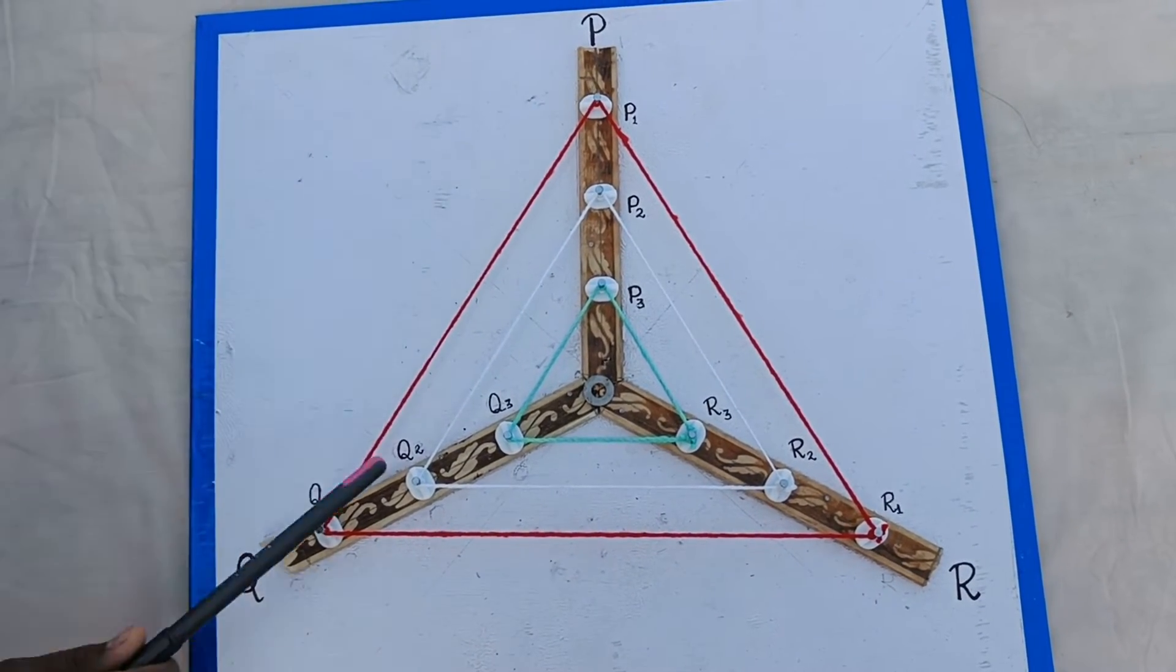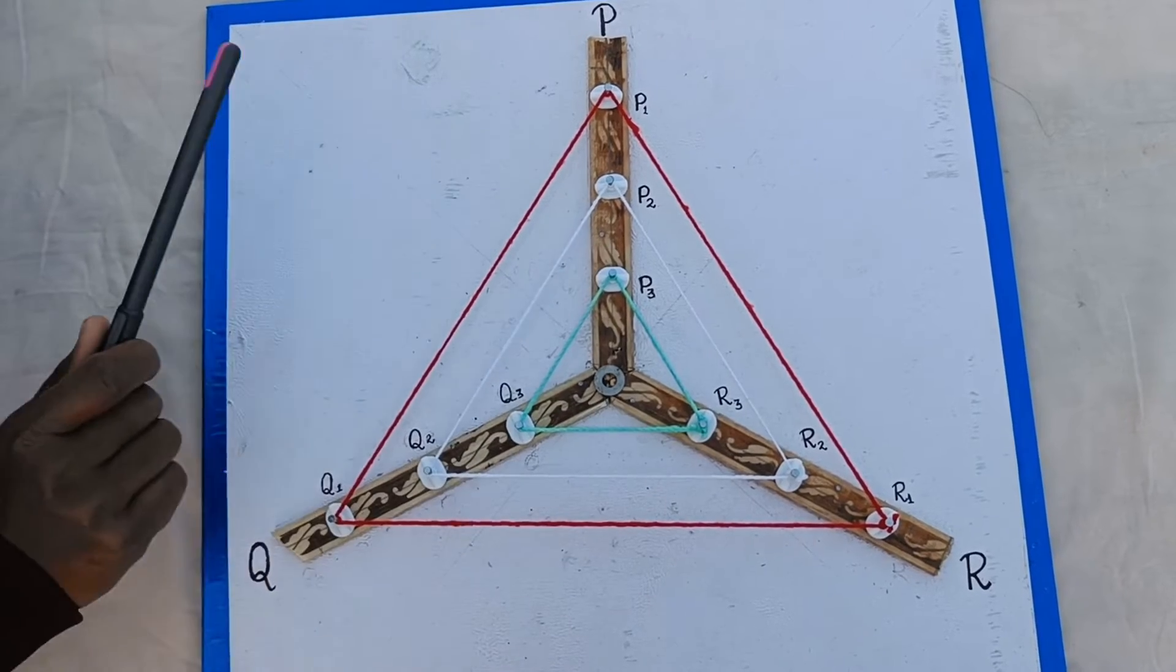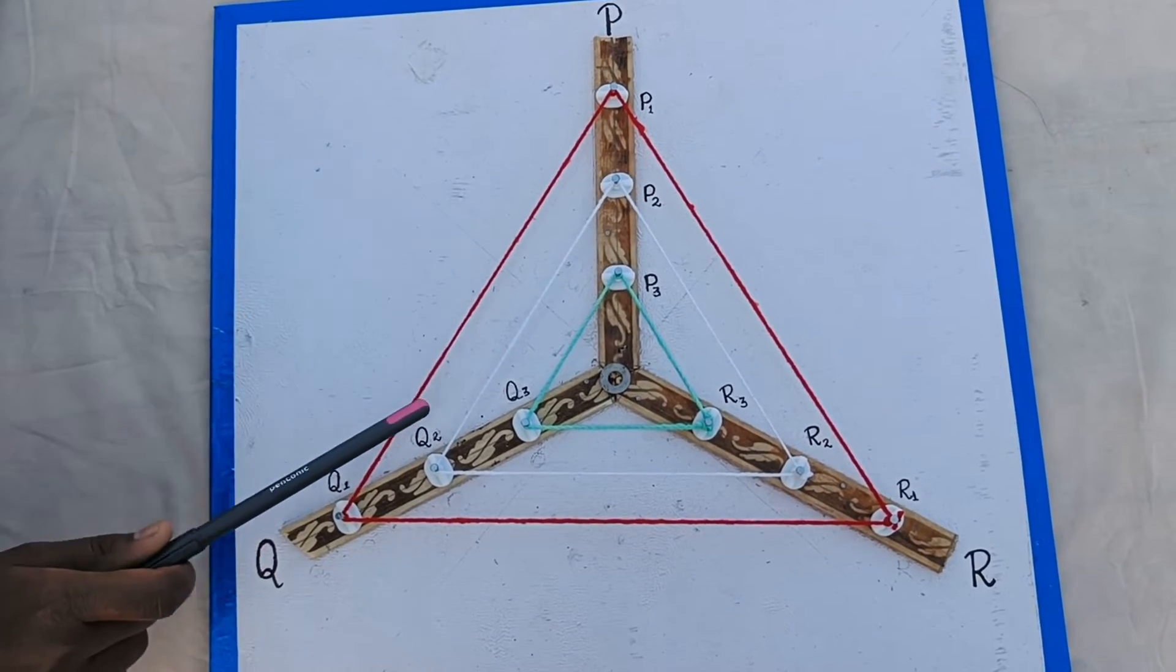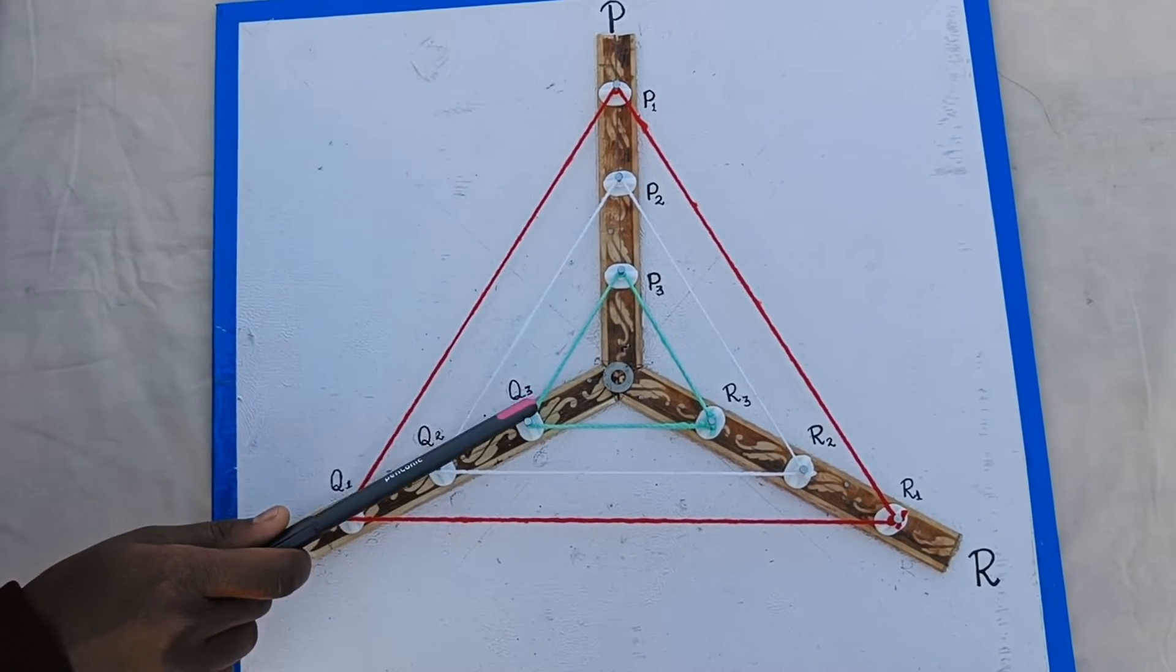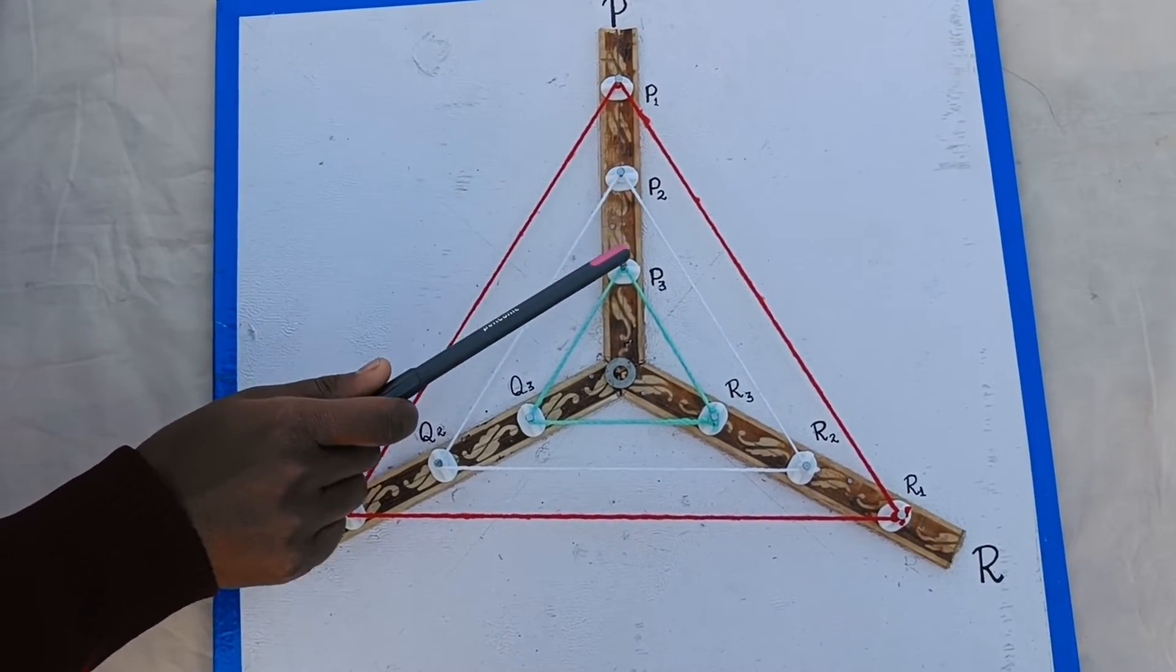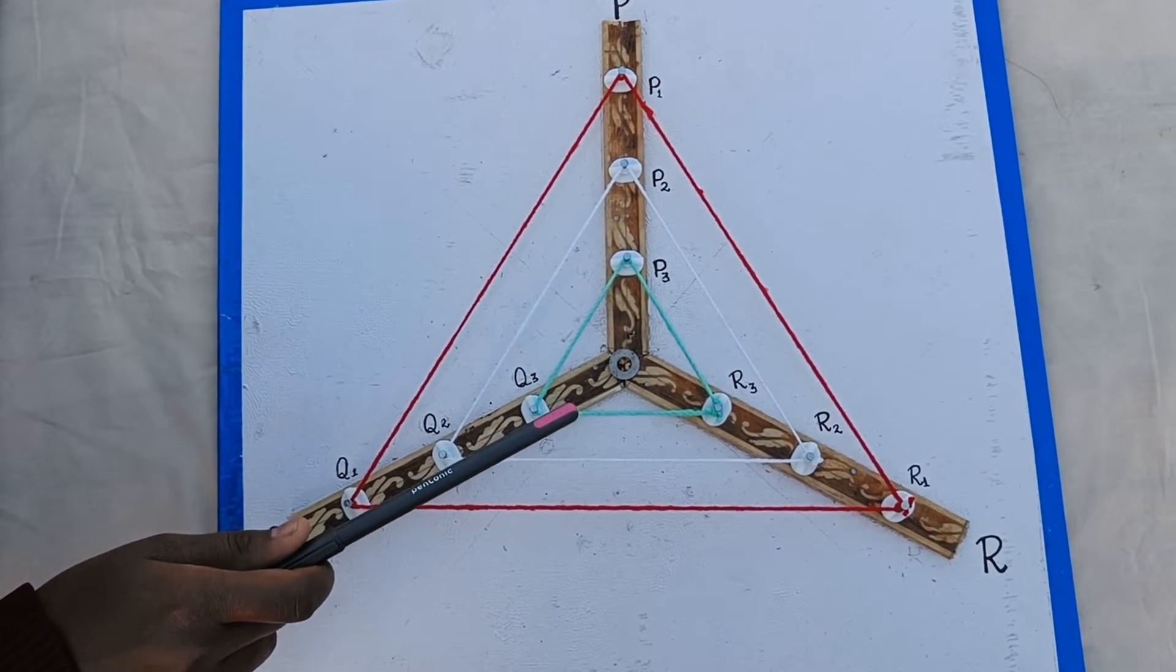say P1Q1R1 and P3Q3R3. Measure the sides of triangles. Find the ratio P1Q1 upon P3Q3, P1R1 upon P3R3, and R1Q1 upon R3Q3.